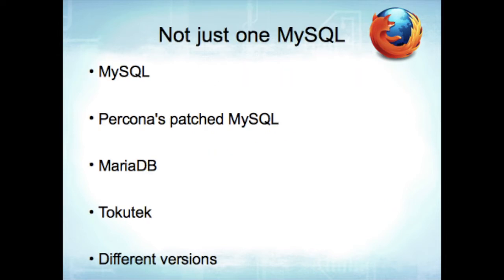I'm going to talk about what we do at Mozilla. One of the best things about this talk is that you can use this logic even if you don't use Puppet. We don't just have one MySQL — we have MySQL, Percona's patched MySQL, MariaDB, and TokuDB, all currently in our installation. We're working on consolidating them. We had Percona 5.5 for a while until we realized MariaDB had better optimization for subqueries, so we changed over. When we upgrade to 5.6, we'll be consolidating those all.